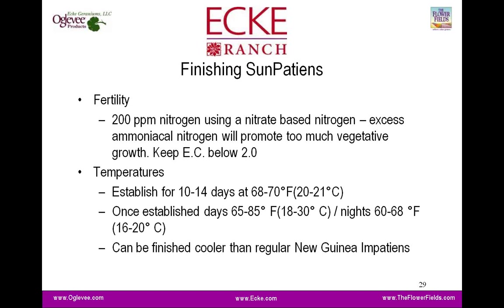For fertility, they're not real heavy feeders — 200 ppm nitrogen, a little bit more than a New Guinea impatiens. Excess ammoniacal nitrogen, as with most crops, is going to promote too much vegetative growth, so it's best to use a nitrate-based nitrogen and stay away from the 20-10-20s, because that will help reduce the need for growth regulators and reduce the amount of stretch you see. Keep the EC at 2.0 and below.